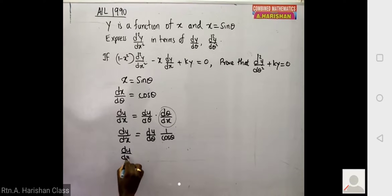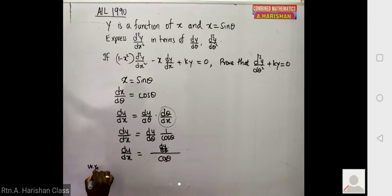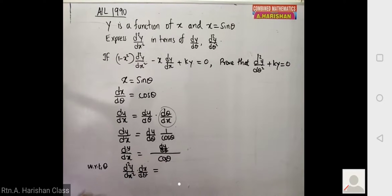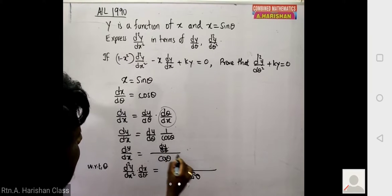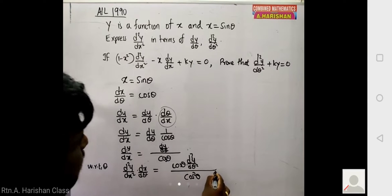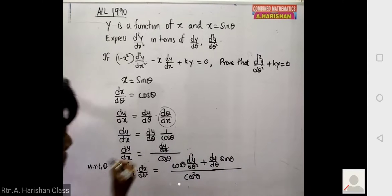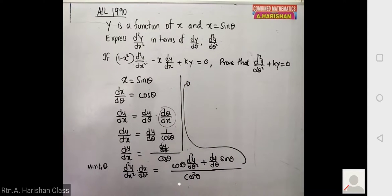Using the u/v form, I write dy/dx with cos θ in the denominator and dy/dθ in the numerator. Now I differentiate dy/dx with respect to θ. This gives d²y/dx² times dx/dθ, and applying the quotient rule across cos² θ I get: cos θ times d²y/dθ² minus dy/dθ times (minus sin θ), making that plus.